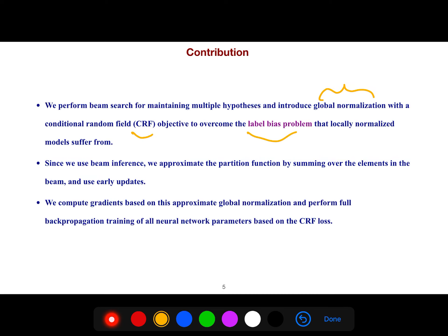Since we use beam inference, we approximate the partition function by summing over the elements in the beam and use early updates. We compute gradients based on this approximate global normalization and perform full back propagation training.